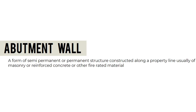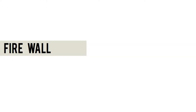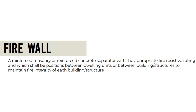An abutment wall is a form of semi-permanent or permanent structure constructed along a property line, usually of masonry, reinforced concrete, or other fire-rated material. Maximum height is 3.2 meters — 1.5 meters solid and 1.7 meters with openings — and a maximum length of 7 meters or not exceeding 50%. A firewall is a reinforced masonry or reinforced concrete separator with appropriate fire-resistive rating, positioned between dwelling units or building structures to maintain fire integrity.